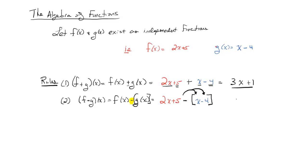So this simplifies to 2x plus 5 minus x plus 4, making sure to distribute that negative to both terms. Combining like terms: 2x minus x gives positive x, and 5 plus 4 gives 9, so the subtraction result is x plus 9.